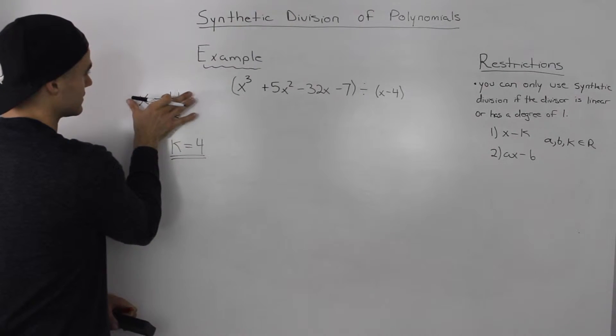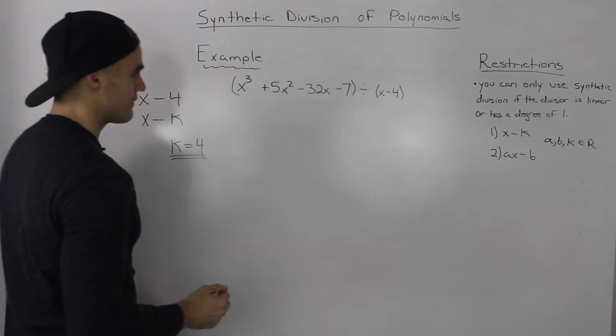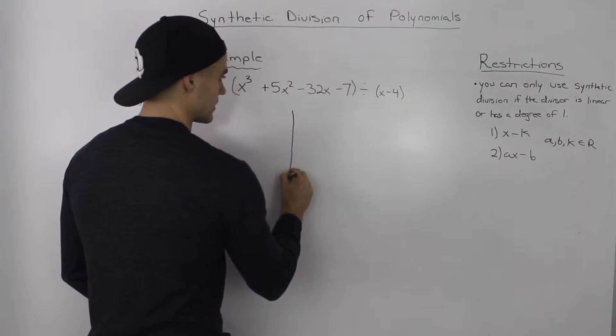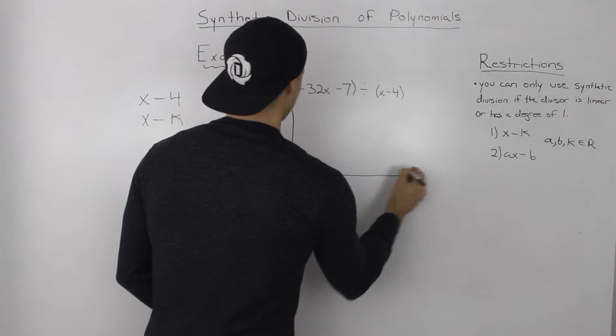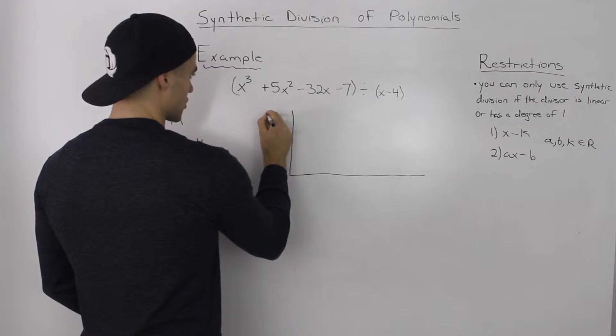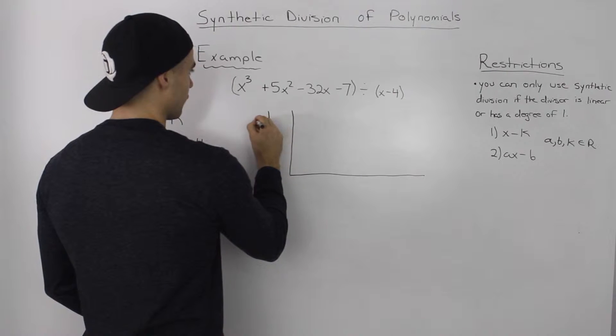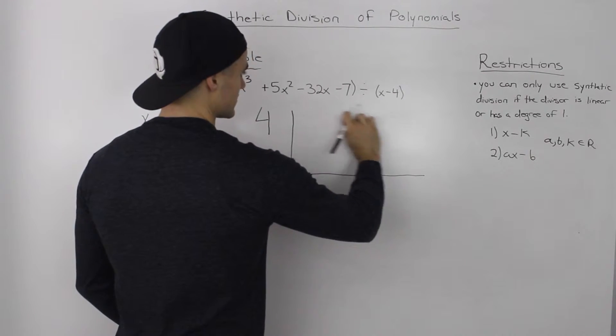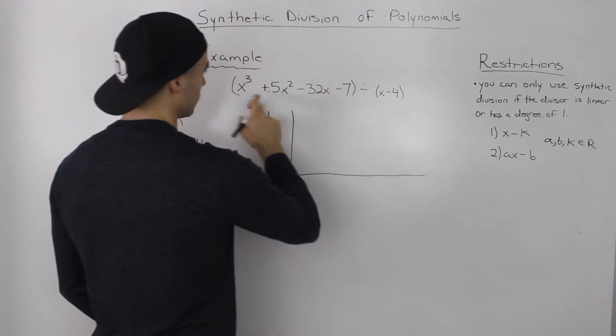Once you find out that the divisor is linear, you have your K value, what you do is you make a chart. And the K value goes outside of the chart here, so we would write 4 up here. And then inside the chart in the top row, there's going to be two rows here.